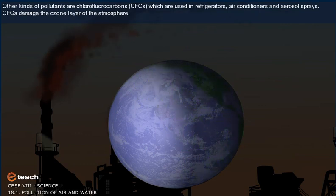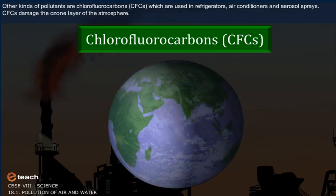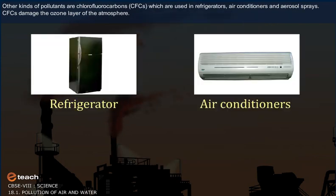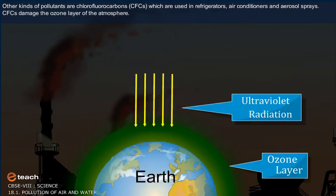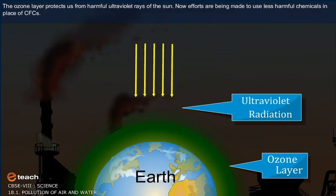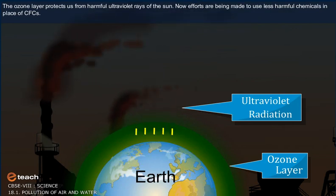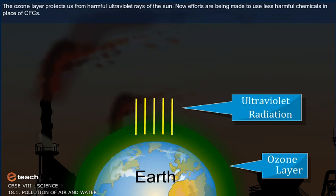Other kinds of pollutants are chlorofluorocarbons, or CFCs, which are used in refrigerators, air conditioners and aerosol sprays. Chlorofluorocarbons damage the ozone layer of the atmosphere. The ozone layer protects us from harmful ultraviolet rays of the sun. Now, efforts are being made to use less harmful chemicals in place of chlorofluorocarbons.